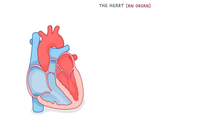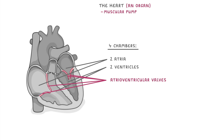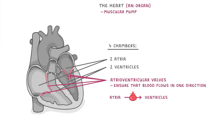Taking a closer look at the heart: this is an organ and you can basically think of it as a big muscular pump. Inside the heart are four chambers. The two at the top are called atria and the two on the bottom are called ventricles. In between the atria and ventricles on either side are the atrioventricular valves, which ensure that blood only flows in one direction — from the atria into the ventricles.